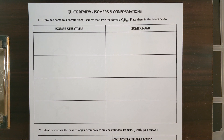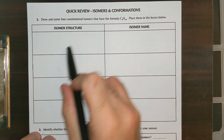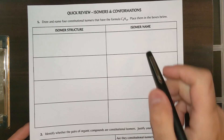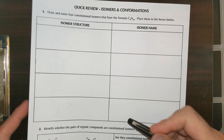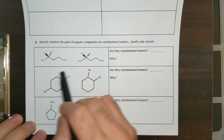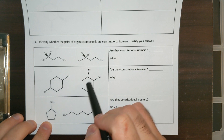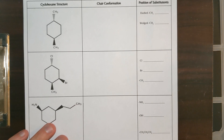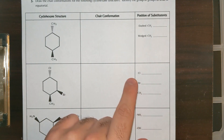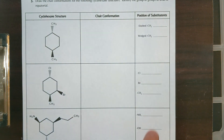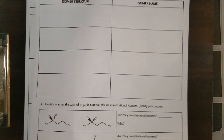Hey organic chemistry. To help you review for the quiz today, I made this quick review that encompasses everything we should have learned from my previous video notes and lectures. You're going to get three different questions on your quiz: one asking you to draw isomers and name them, another to identify whether a pair of structures are isomers and explain why, and another to draw chair conformations and identify axial or equatorial positions. Let's get started.